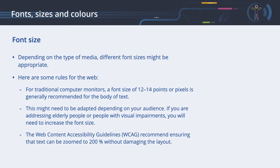Depending on the type of media, different font sizes might be appropriate. For traditional computer monitors, a font size of 12 to 14 points or pixels is generally recommended for body text. This might need to be adapted depending on your audience — if you are addressing elderly people or people with visual impairments, you will need to increase the font size. The Web Content Accessibility Guidelines, or WCAG, recommend ensuring that text can be zoomed to 200% without damaging the layout.